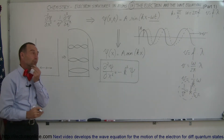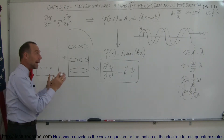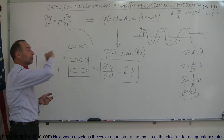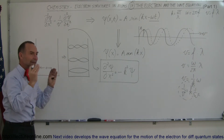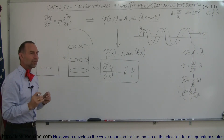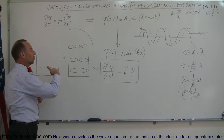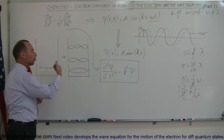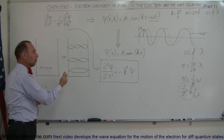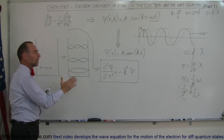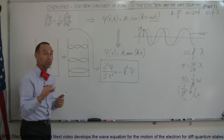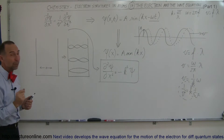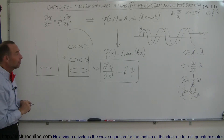We can also assume that when we go to the atom and the electron travels around the nucleus, since it exists in quantum states and can only exist as an orbit equal to one wavelength, two wavelengths, or three wavelengths, this probably also applies to an electron in an atom — and we'll see that in just a few videos.